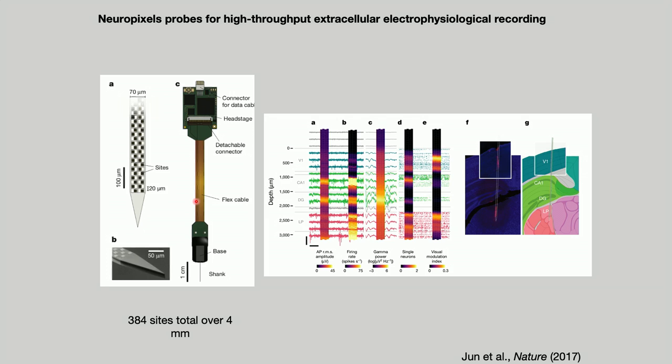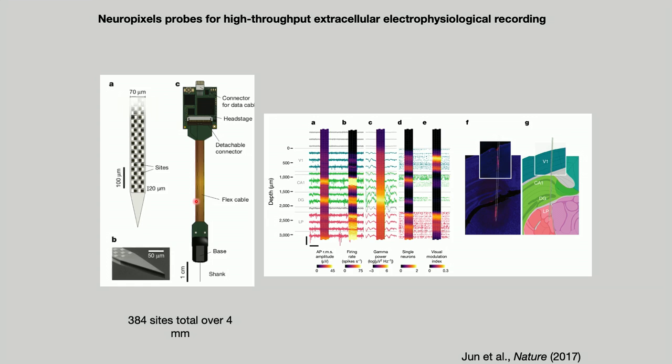Around the time I started this project, a new technology brought electrophysiology into the 21st century. Since the 1960s, people have used extracellular electrophysiology to record single neuron activity in awake behaving animals with very high temporal resolution — sticking a fine electrode into the brain to record action potentials. A project launched around five or six years ago used modern microelectronics to build parallel versions of these recording arrays: a single piece of silicon with hundreds of recording sites on a tiny needle you can stick into the brain, allowing you to simultaneously record from several hundred neurons with single-cell and single-spike resolution at millisecond or microsecond temporal resolution.